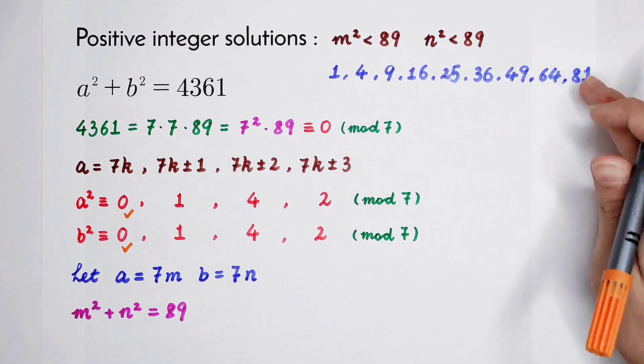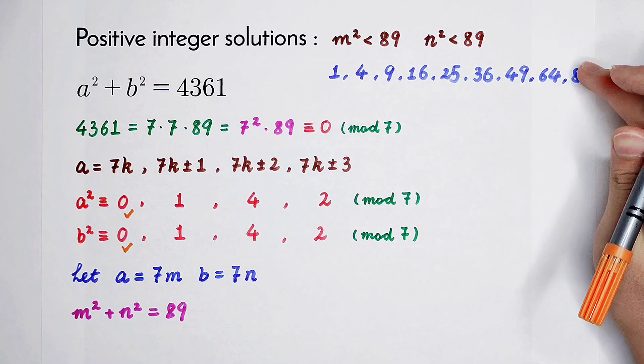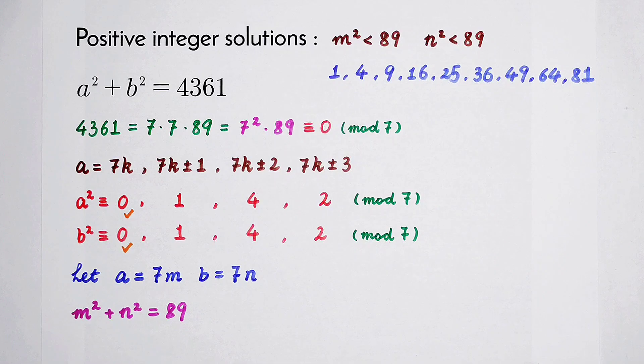So 81 plus 9, 81 plus 16, until 81 plus 64, 81 plus 81 - all of them are wrong.